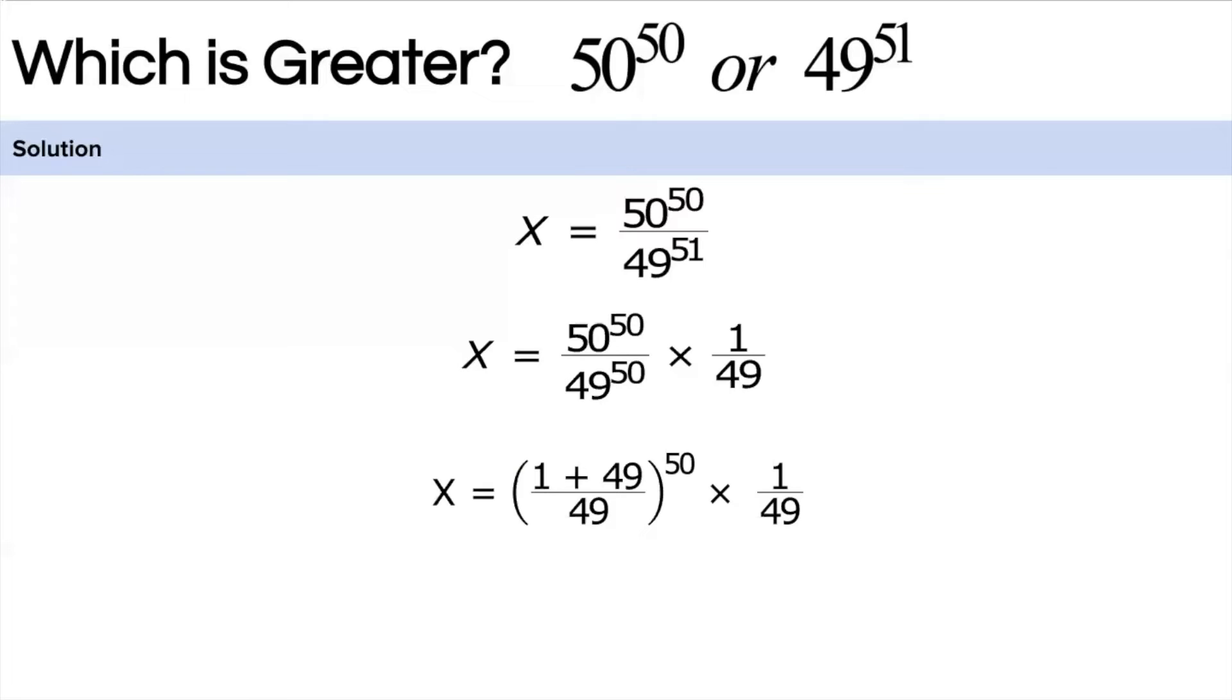Now we can write the above term as (1 plus 1 over 49) raised to the power 49, multiplied by (1 plus 1 over 49), multiplied by 1 over 49. So what we have done is split this term: (1 plus 1 over 49) raised to the power 49, and we have taken out one (1 plus 1 over 49) factor, and this 1 over 49 was the original term we're getting from above.